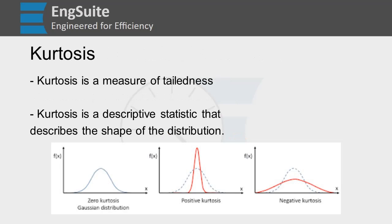So that other statistic I mentioned is kurtosis. And kurtosis is a measure of tailedness. So that's how heavy are your tails. Kurtosis is another descriptive statistic that describes the shape of the distribution.